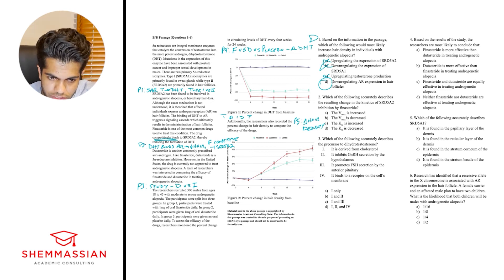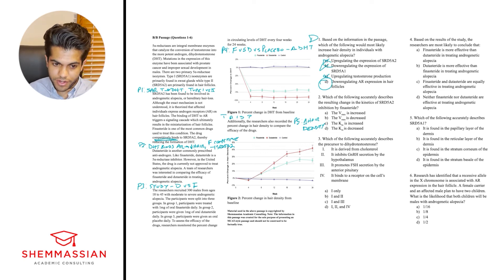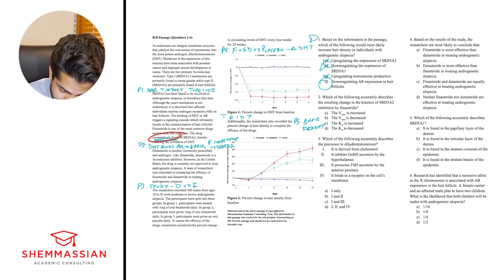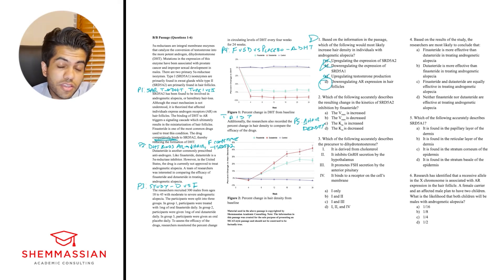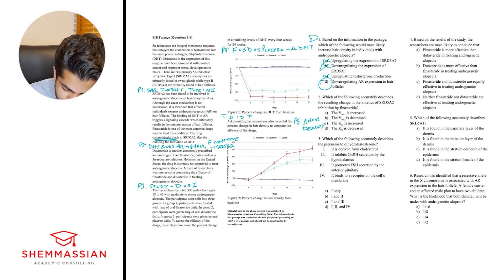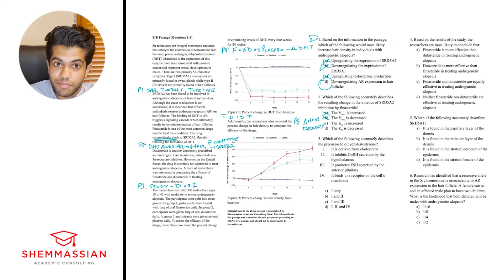Question 2: which of the following accurately describes the resulting change in kinetics of SRD5A2 inhibition by finasteride? The options are Vmax increase, Vmax decrease, Km increase, or Km decrease. From paragraph 2, we noted that finasteride is a competitive inhibitor of SRD5A2. For the MCAT, you should know that competitive inhibitors decrease the binding affinity of the enzyme to the substrate — a decrease in binding affinity means an increase in Km. And competitive inhibitors don't impact Vmax. So C — Km increase — is our best answer.